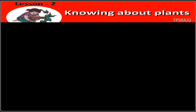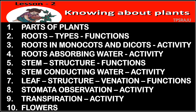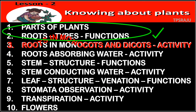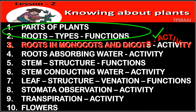Already we know that there are 10 topics in this chapter. In the previous videos, we completed the first two topics. Today we are going to learn about the third topic, that is Roots in Monocots and Dicots activity.